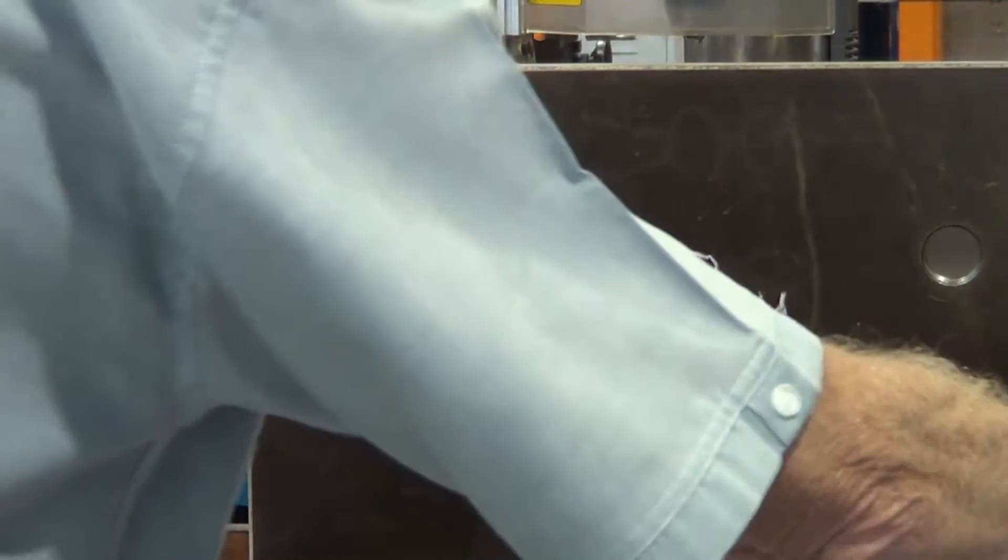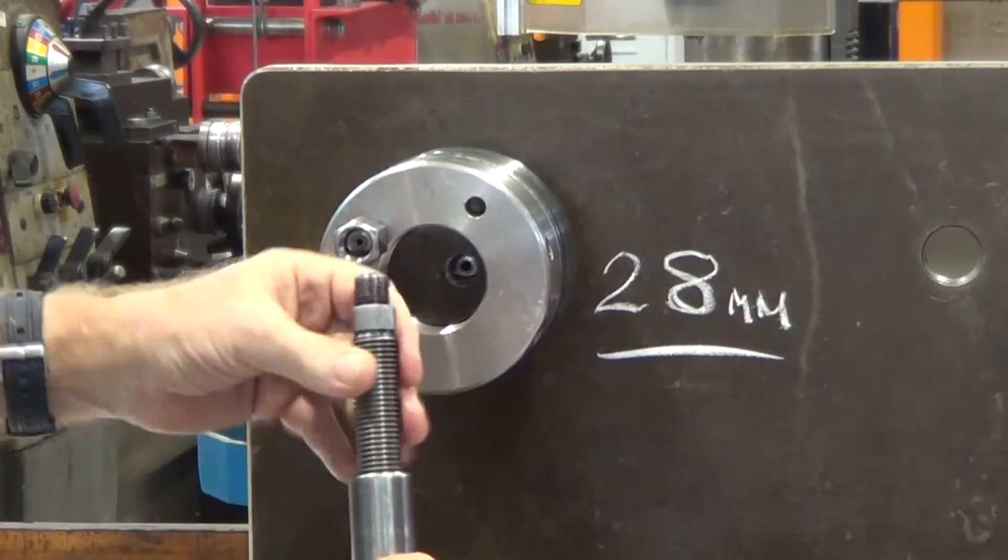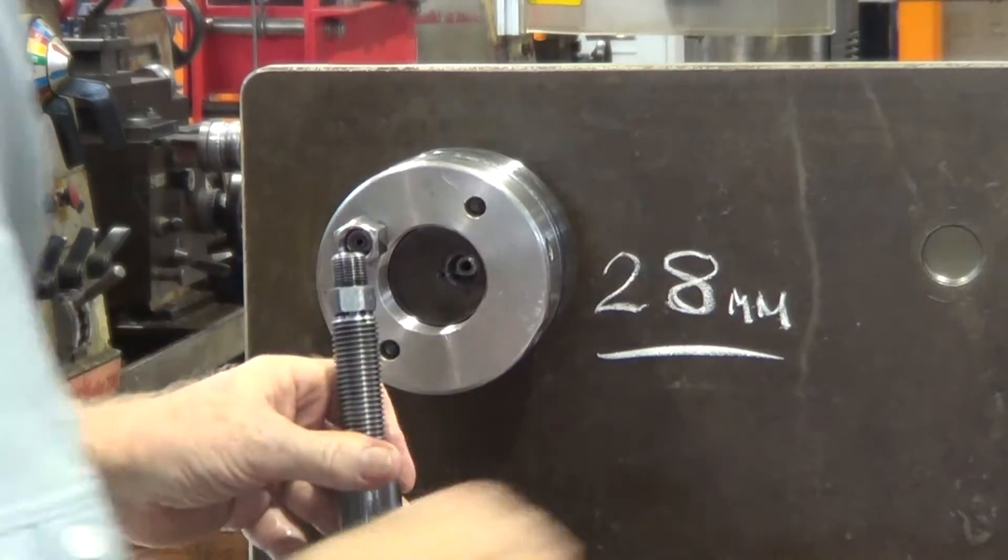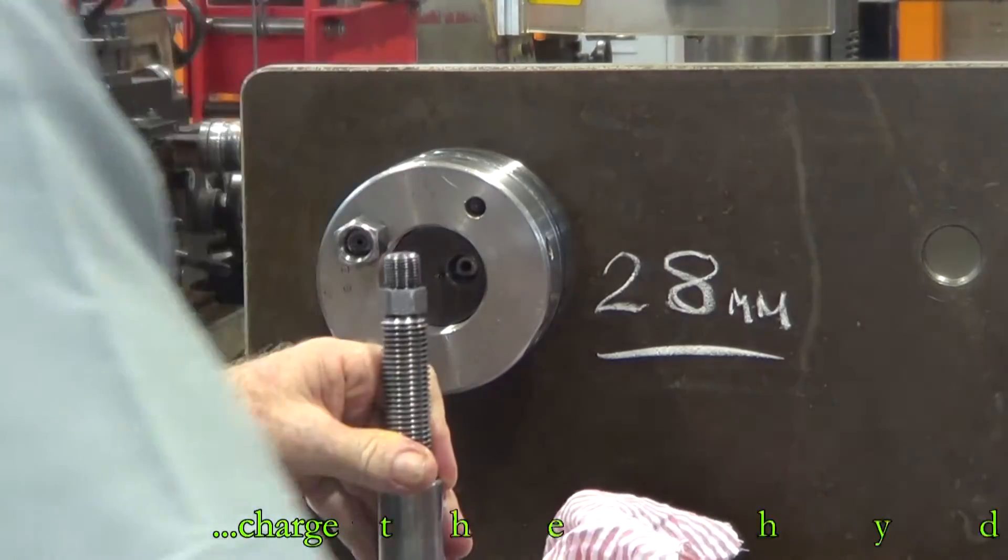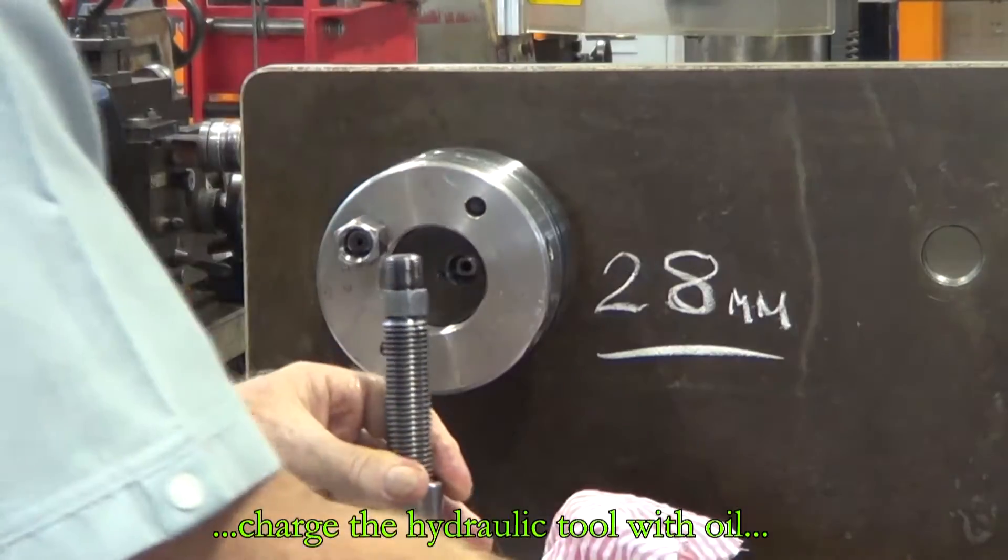Once again, we'll just screw out the threaded section as far as we can. Make sure that the plunger or piston is right down at the bottom. Prime the tool up with oil.